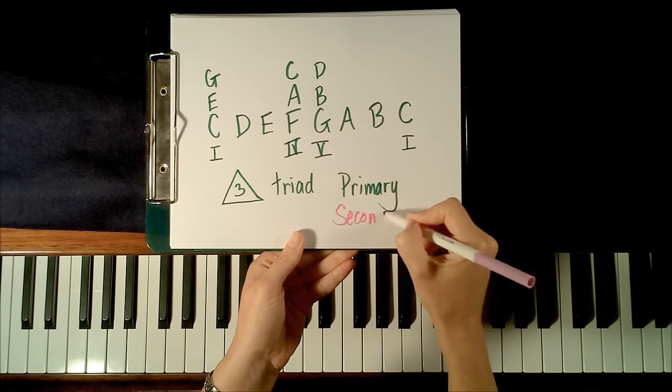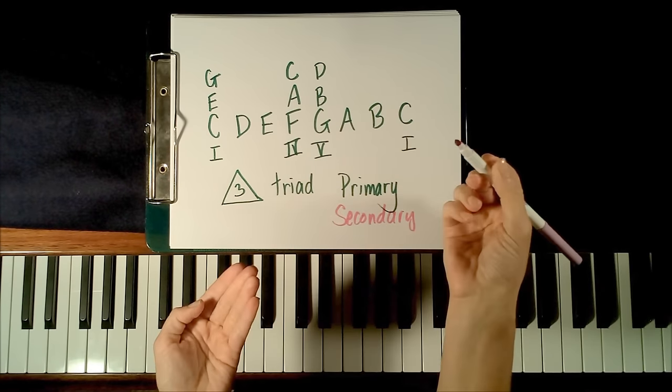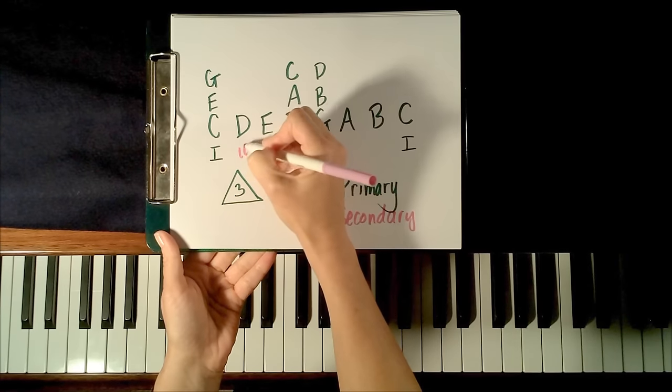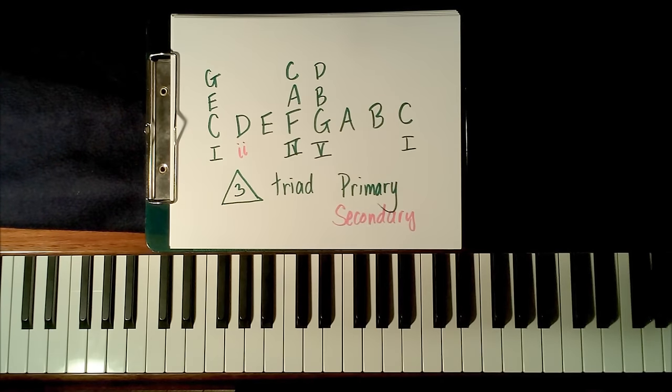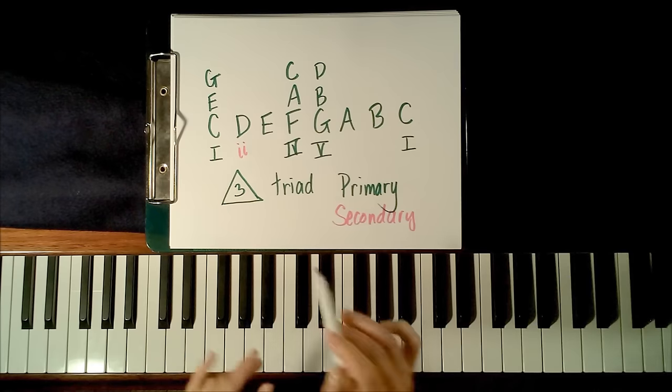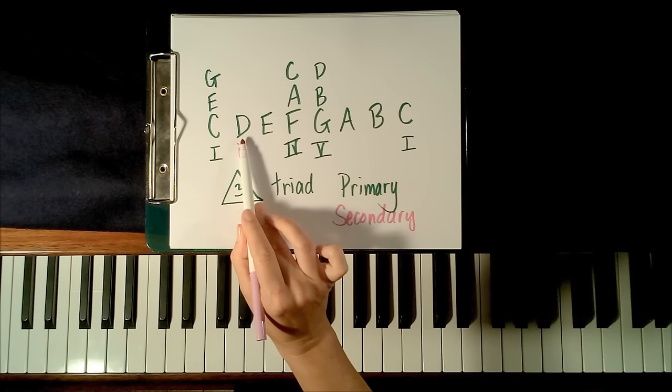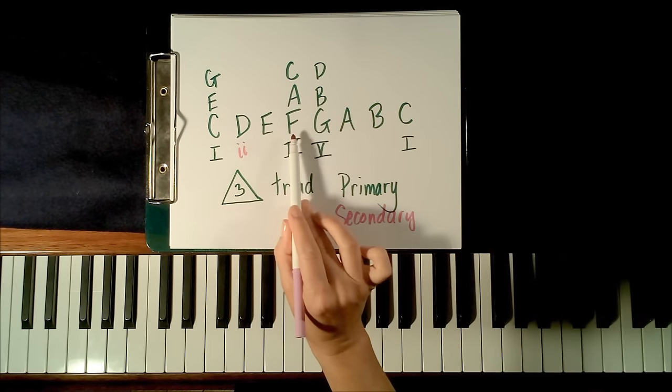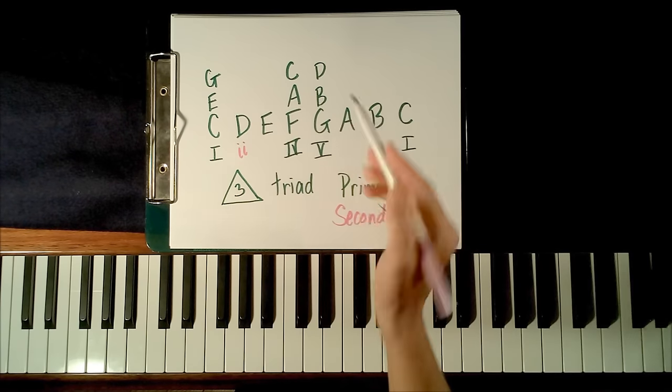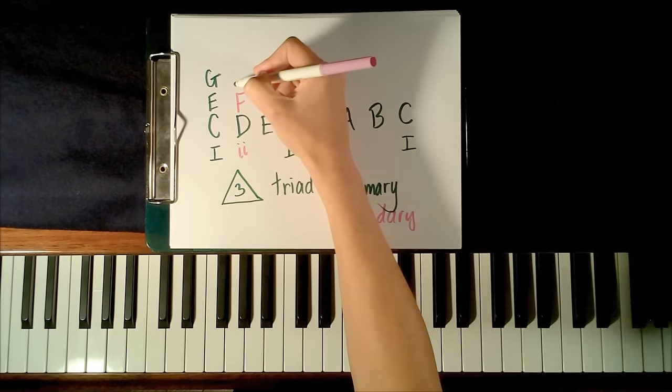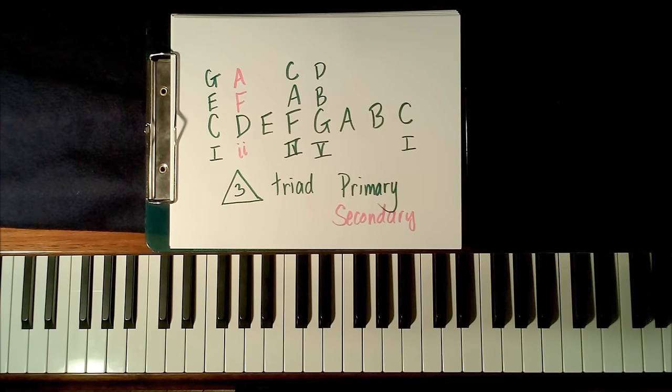And then we also have a set of chords called secondary. And the secondary chords are using the other notes that we haven't played yet. So the first secondary chord we'll talk about is built on D and nothing changes. What we're going to do is we're going to play D, a skip above D, which is F. And a skip above F, which is A. So this first secondary chord is made of the notes D, F, and A.